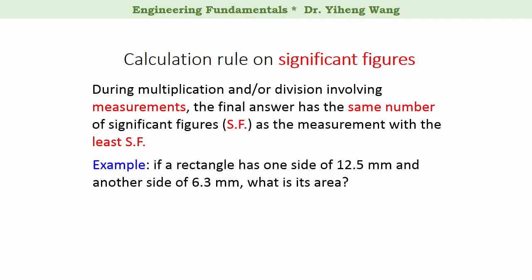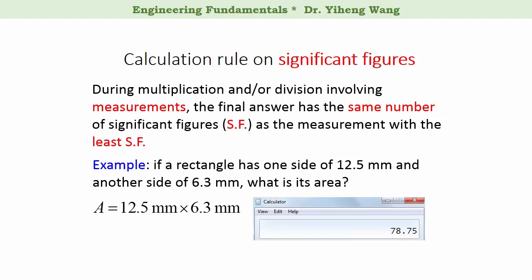The calculation is very simple. Area equals the product of these two sides. If we use a calculator, 12.5 multiplied by 6.3 equals 78.75. But the answer here should be rounded up to two digits: 79 squared millimeters, following this calculation rule. This is because we have two measurements — 12.5 has three significant figures, and 6.3 has two significant figures, which is less. Therefore, the answer here should also have two significant figures.